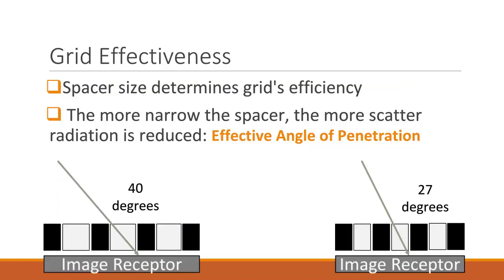When we look at grids, it is helpful to know how effective they are. Not all grids are created equal. The spacer size determines the grid's efficiency in cleaning up scatter. As the spacer size is decreased or narrowed, the amount of scatter radiation able to make it past the grid is decreased as well. This is because x-ray photons directed at a greater angle will be absorbed by the lead strips. This is known as the effective angle of penetration.